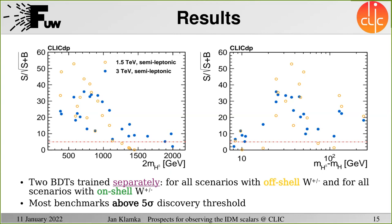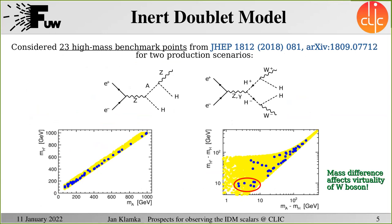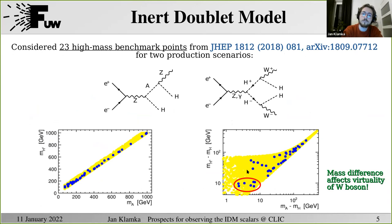For the second question, regarding the low-mass benchmark points: Jan, do you have the benchmark points? We'll probably have to take this offline. Share it in the chat. The question is of course how low you can go in the masses of the heavy scalars. Many thanks indeed. We should probably move on, and our next presentation is going to be given by Niklas, who's going to talk about Higgs measurements at future circular colliders.